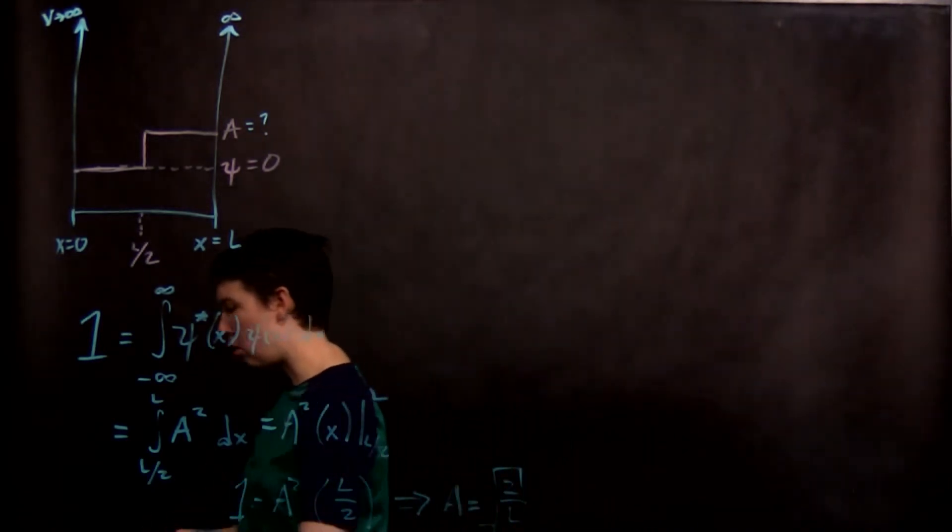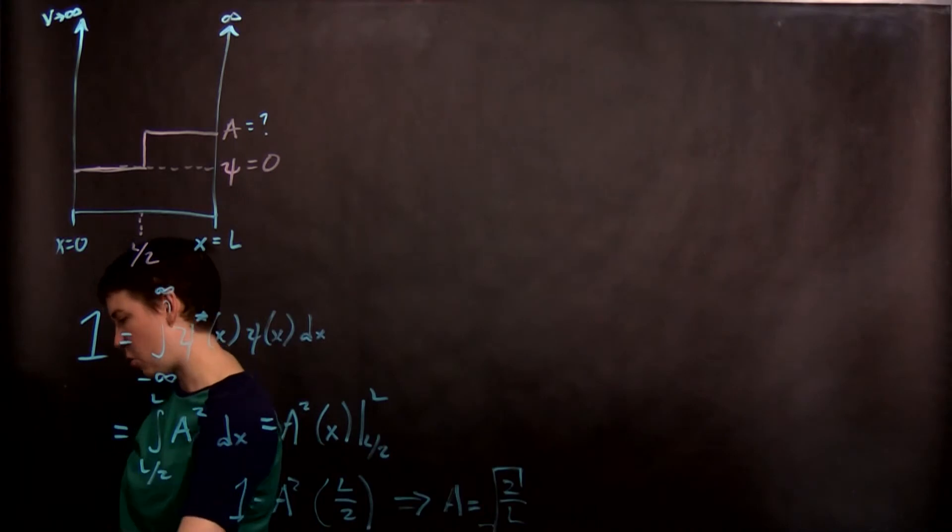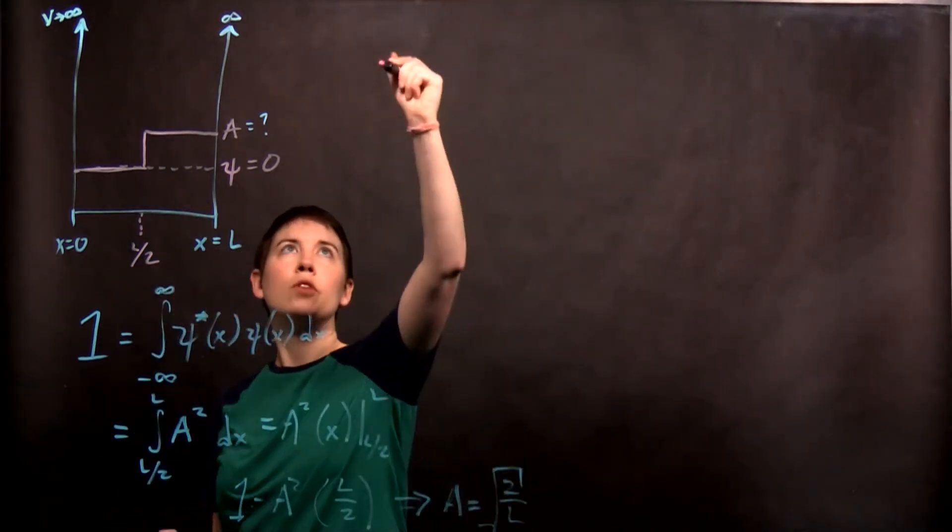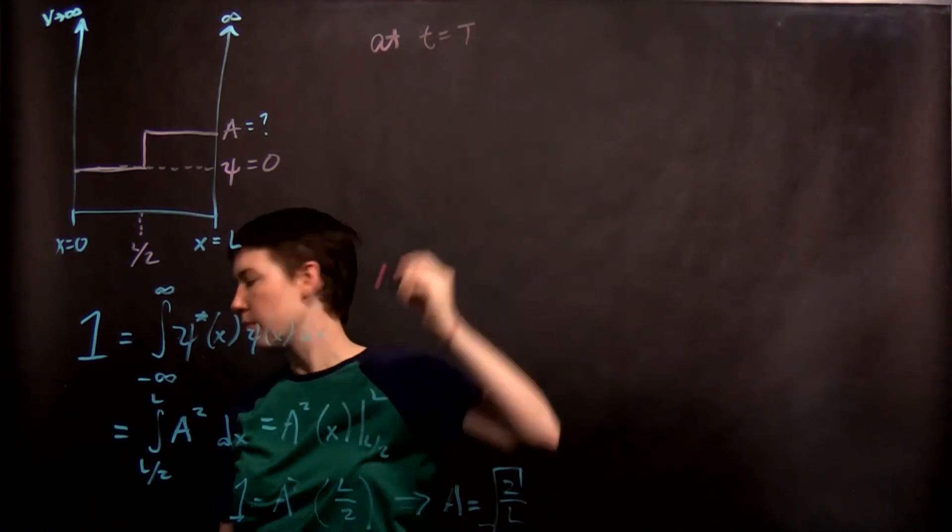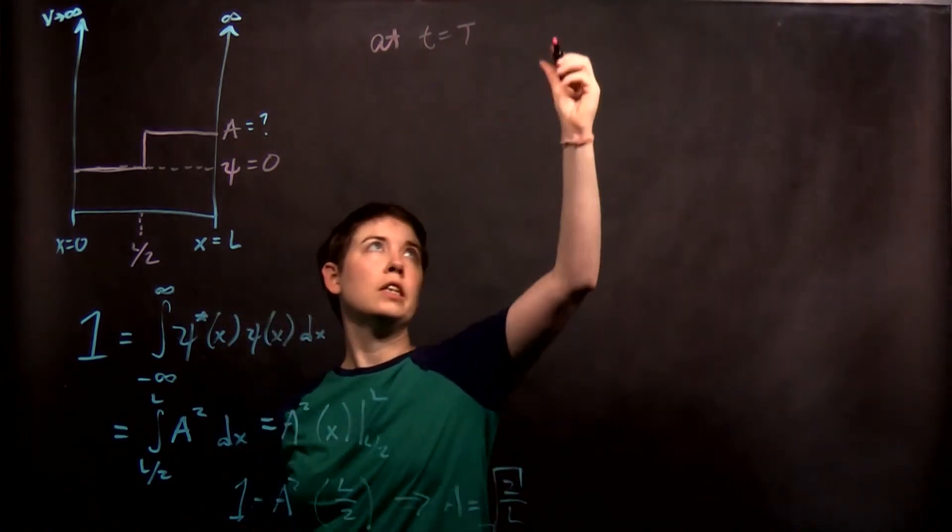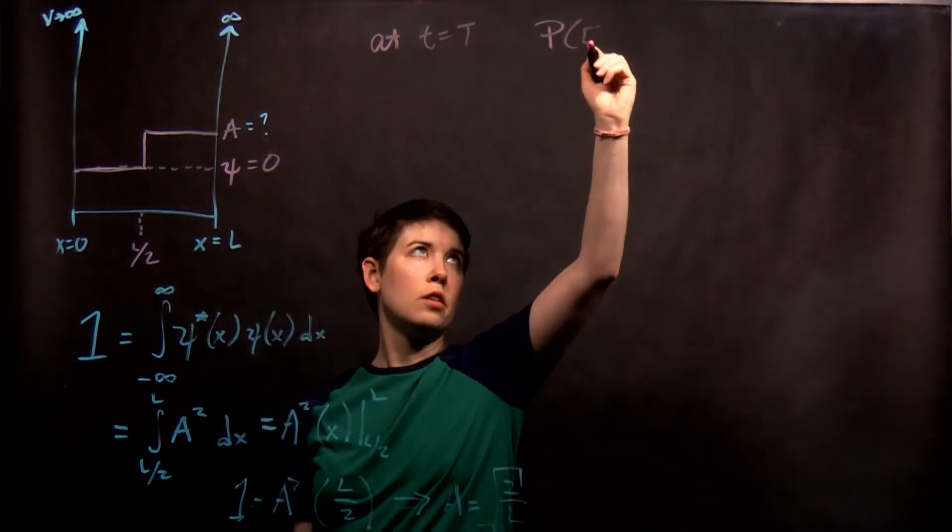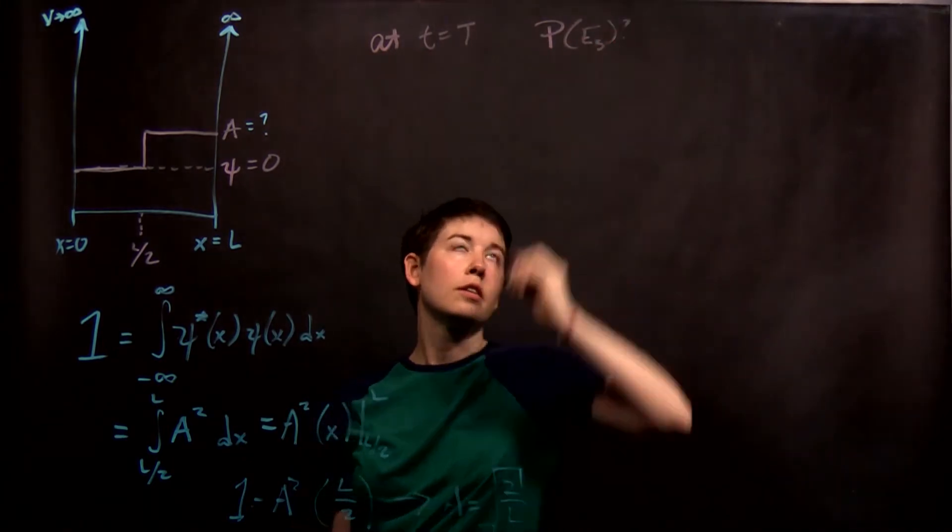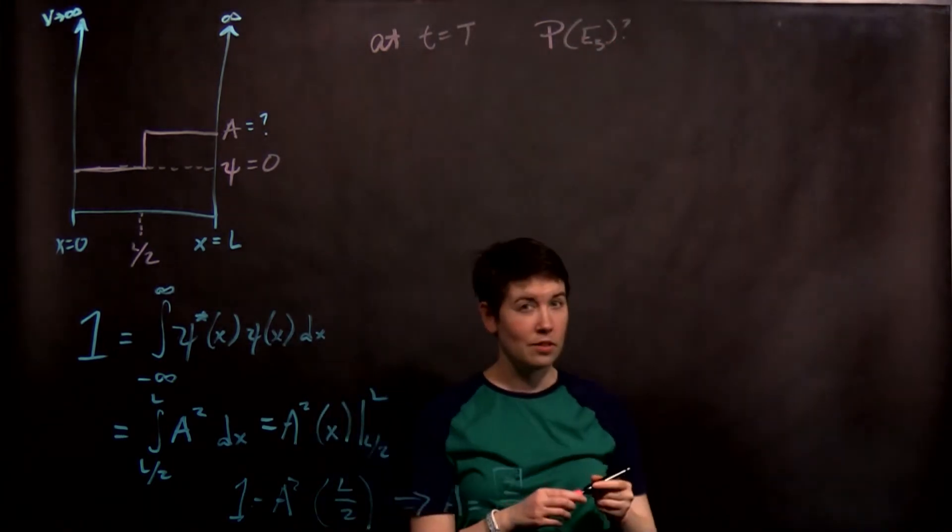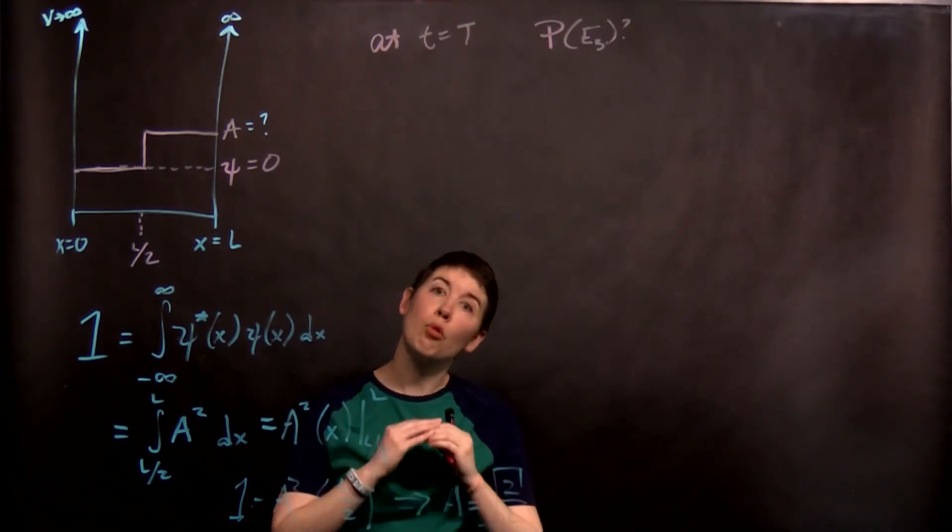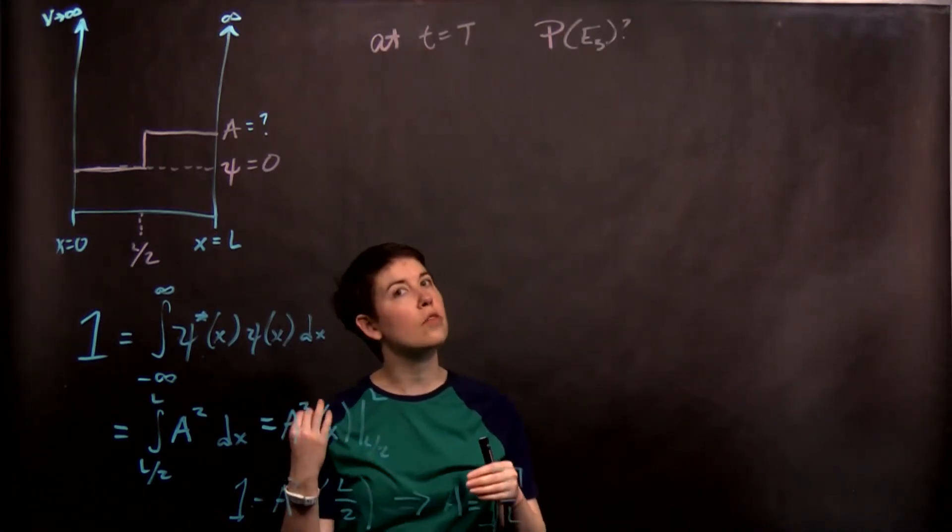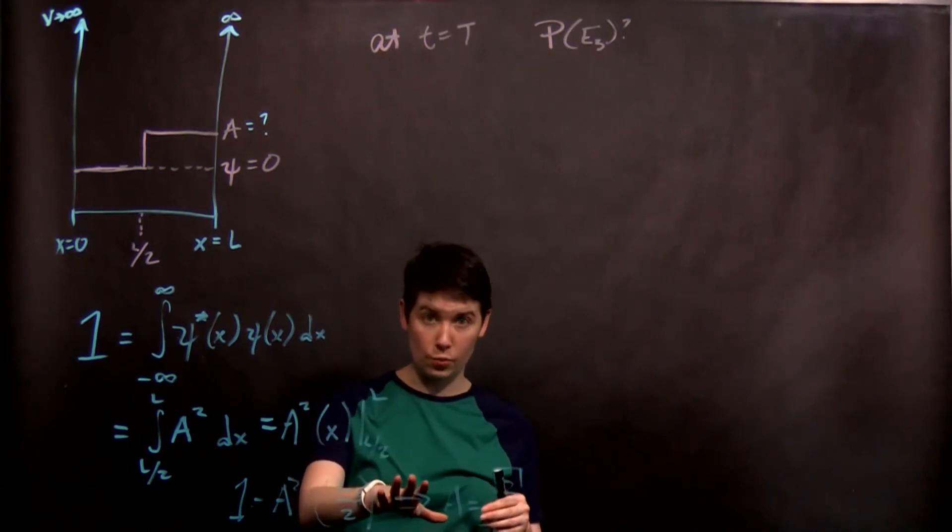So now we might ask a question. I'm looking at my notes to figure out what that question is. At a later time t, so at time equals capital T, what is the probability of measuring E3? Now, this is kind of a trick question, is that we don't actually need to know at a later time. The probability of measuring given energies does not change with time.